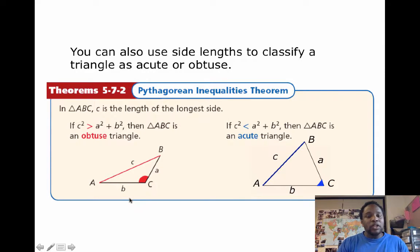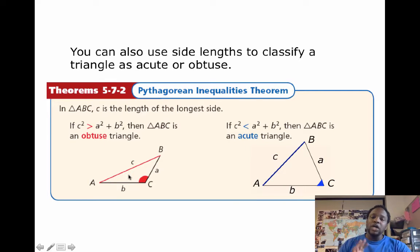So, in this first one, in triangle ABC, C is the longest side length. So, C will always be the longest side length. If C squared is greater than A squared plus B squared, then triangle ABC is an obtuse triangle. You know, it has a large angle, an angle that's greater than 90 degrees but less than 180. So, if C squared is greater than, then it's obtuse. If C squared is less than A squared plus B squared, then triangle ABC is an acute triangle. So, look at the C squared because I think of, like, greater than is obtuse because it's greater than 90 degrees. And I think of less than for acute because acute is less than 90 degrees.